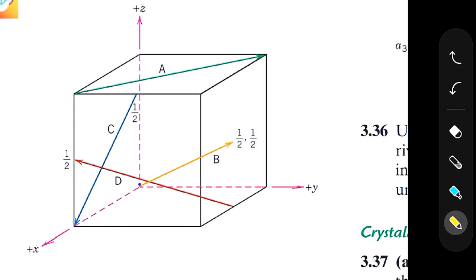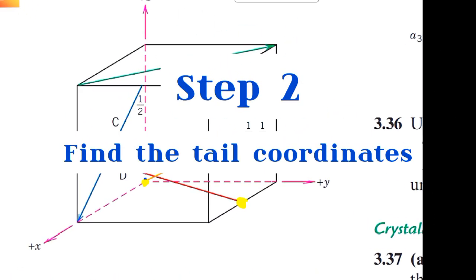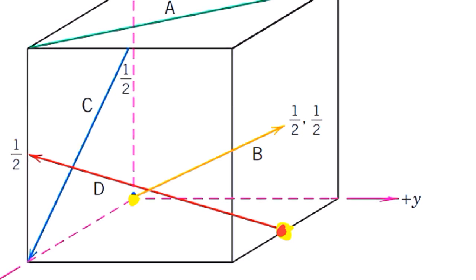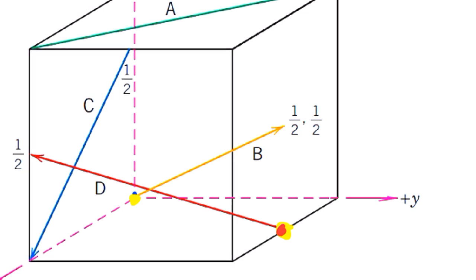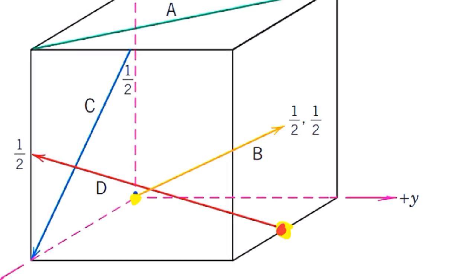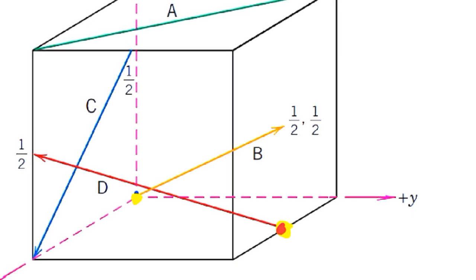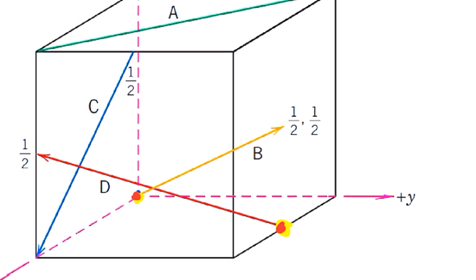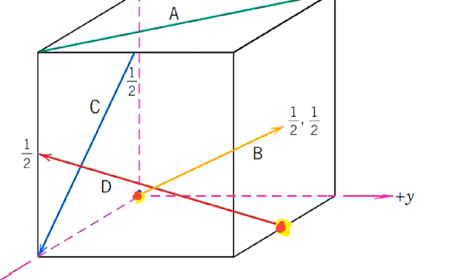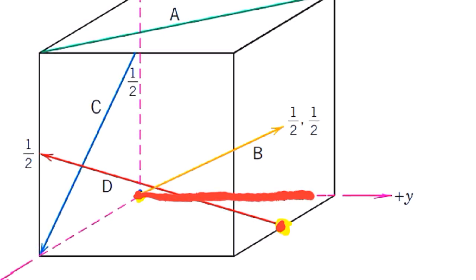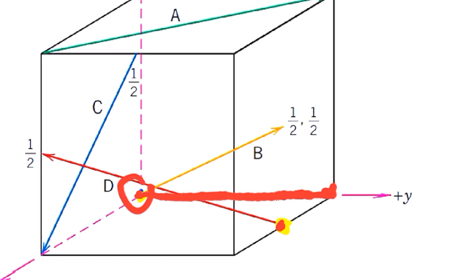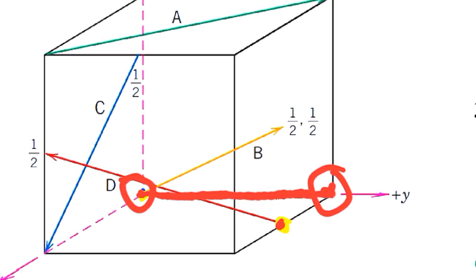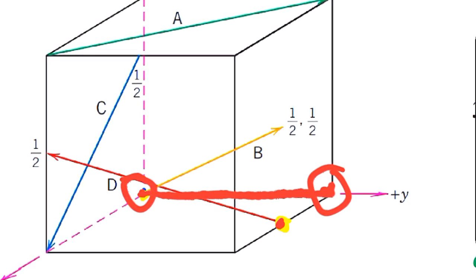Now let's move to the second step, which is to find out the tail coordinates. We can see the tail is located at this position. By coordinates we mean how much motion we have to make in the x, y, and z directions to reach that point, starting always from the origin. Moving from one corner of the unit cell to another corner along y direction counts as one unit.